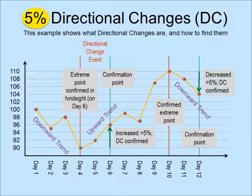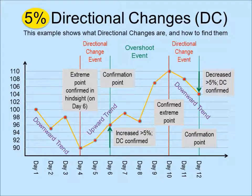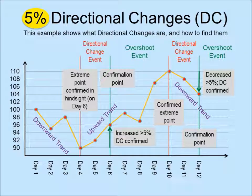The price changes from 96 on day 6 to 110 on day 10 is an overshoot event. This is followed by another directional change event on day 10 and an overshoot event on day 12. To summarize, the market alternates between downward and upward trends. In each trend, there is a directional change event followed by an overshoot event. This is a new way to summarize events in the market.